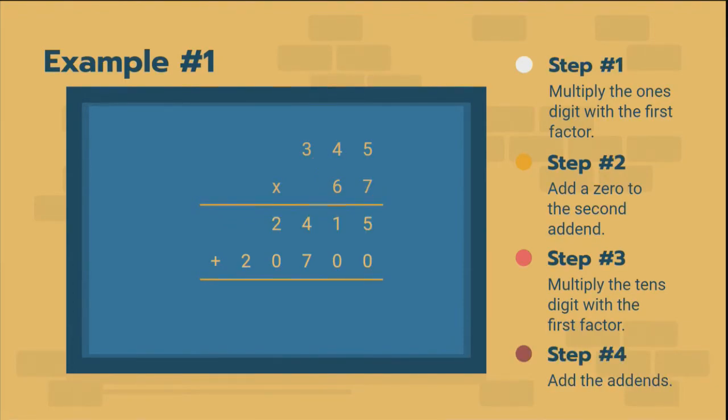Step four. Add your addends. Easy peasy. That last step should be nice and easy as long as you make sure not to make any addition errors. You still got to be careful. Even though it's addition.